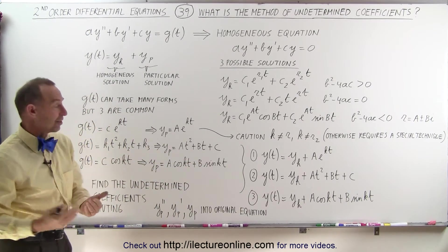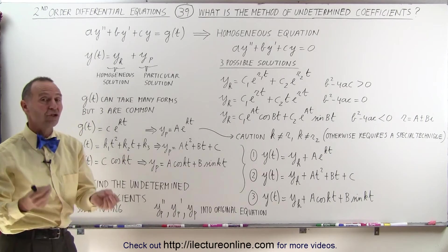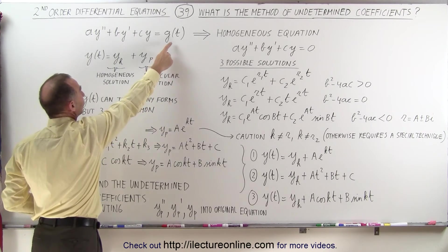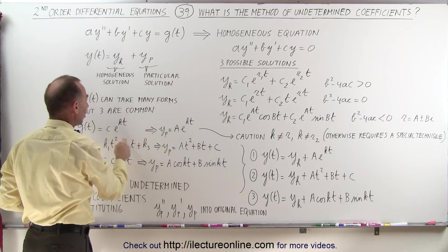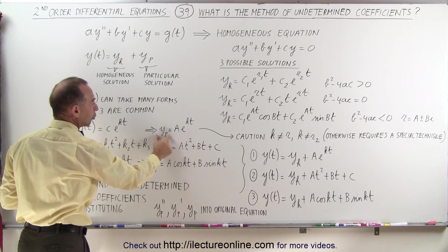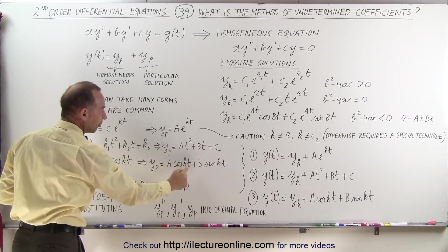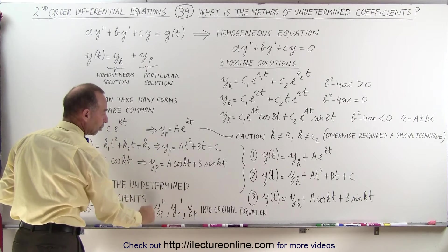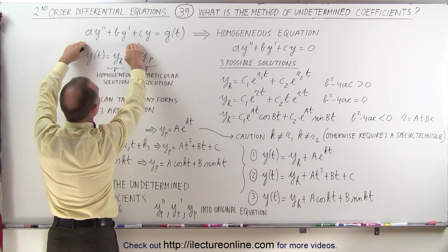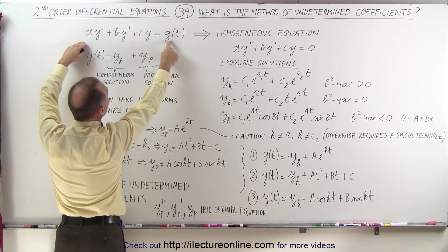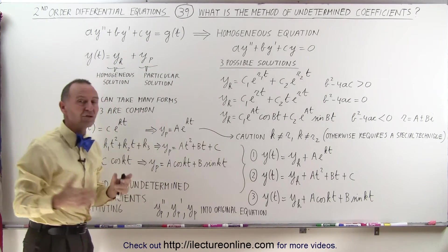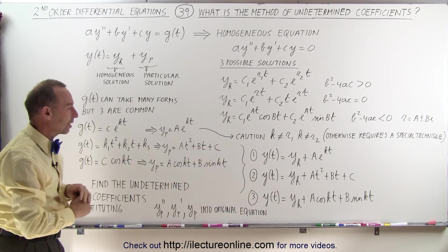We're going to show plenty of examples of how to actually do that, but here's the general approach: you see what form of the equation makes it non-homogeneous, you recognize it for the particular type of function, you set up a particular solution with undetermined coefficients, then you find the first and second derivatives, plug the function and its derivatives back into the original equation, equate it to g of t, and find the undetermined coefficients by solving those linear equations simultaneously.